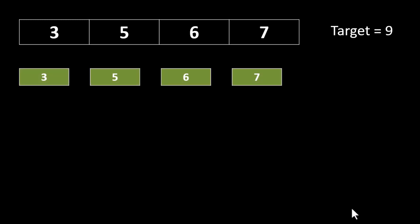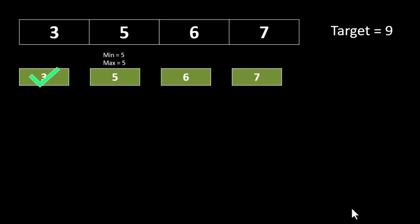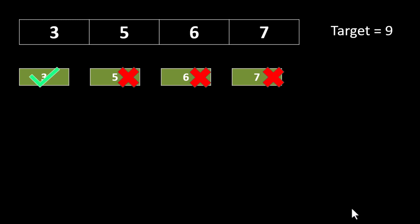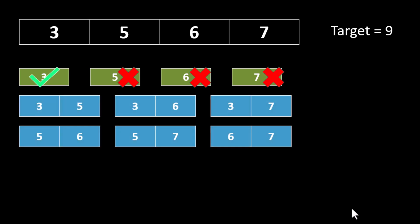There will be four subsequences of size one, each with only one element. The minimum and maximum in the subsequence with only value 3 is 3, and the sum of minimum and maximum is less than or equal to 9, so it is a valid subsequence. For the next subsequence, the minimum and maximum is 5, and 5+5=10 is not less than or equal to 9, so it doesn't satisfy. Since 5 doesn't satisfy, we already know that 6 and 7 will give a result greater than the target.